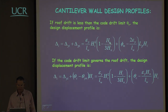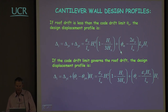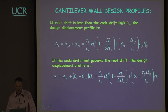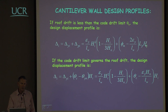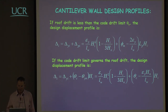The elastic displacement profile plus the plastic displacement profile — found from the plastic curvature for the particular limit state minus the elastic curvature, times the plastic hinge length, times the height of the particular floor — gives us the result directly. We don't have to estimate what the mode shape would be like.